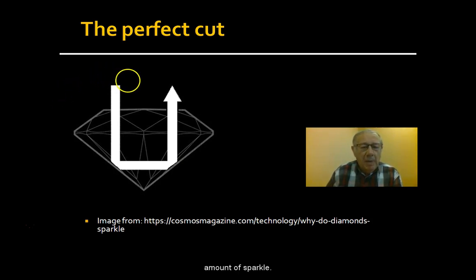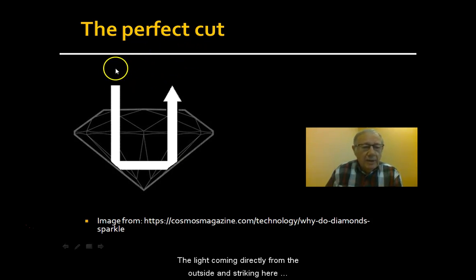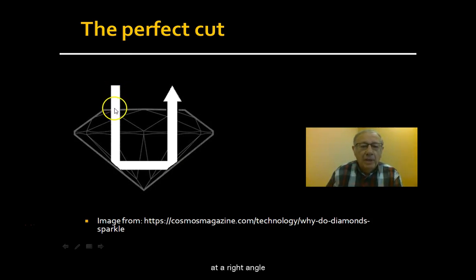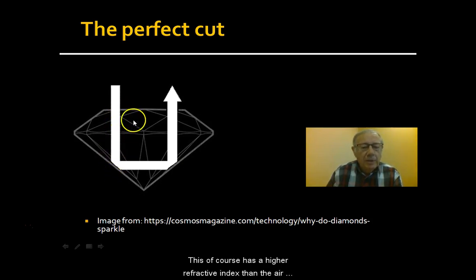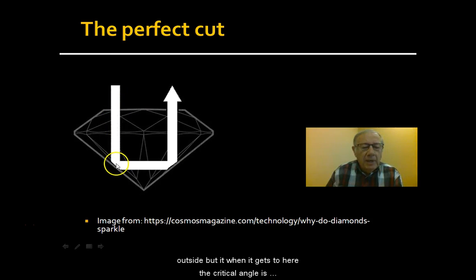Light coming directly from the outside, striking here at a right angle, undergoes refraction in the sense that the velocity of the light is changed as it comes through the diamond. The diamond of course has a higher refractive index than the air outside.